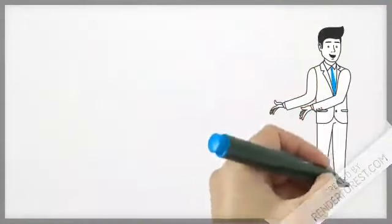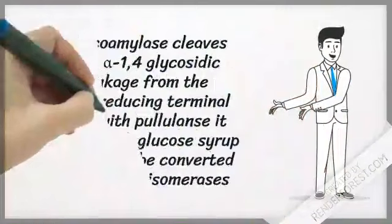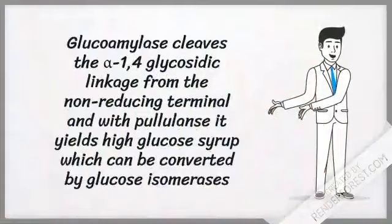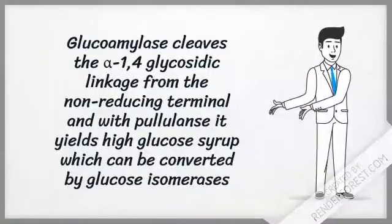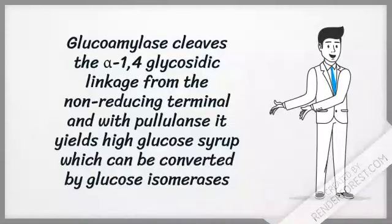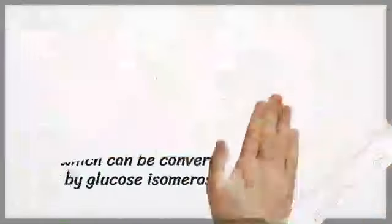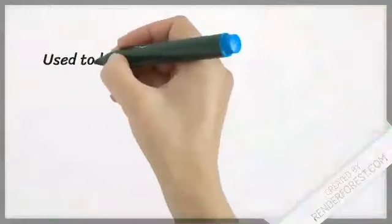The final step, saccharification, is where glucoamylase cleaves the alpha-1,4 glycosidic linkage from the non-reducing terminal. Along with pullulanase, it yields high glucose syrup, which can be converted to fructose by glucose isomerase.